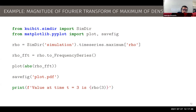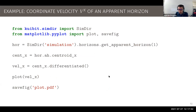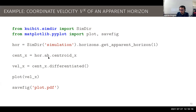Another example: working with horizons. I want the coordinate velocity along the x-axis for horizon number 1. The script follows the same pattern — SimDir pointing to our directory, now focused on horizons. We get horizon number 1 and read data from the apparent horizon finder thorn (dot-ah, not the causal dot form). We access the centroid, specifically the x-centroid location — this is a time series. Being a time series, I can take a derivative to get velocity. I can then plot this directly using standard matplotlib.